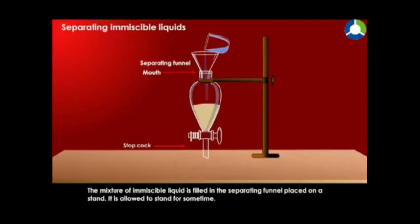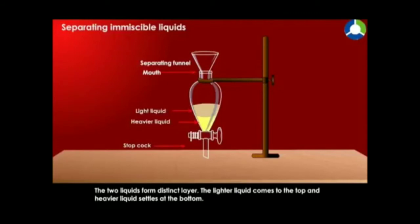The mixture of immiscible liquid is filled in the separating funnel placed on a stand. It is allowed to stand for some time. The two liquids form distinct layers. The lighter liquid comes to the top and heavier liquid settles at the bottom.